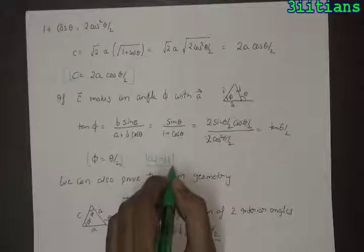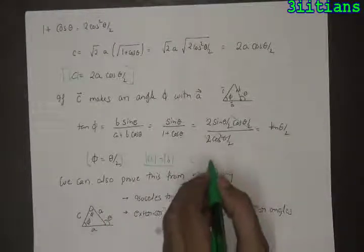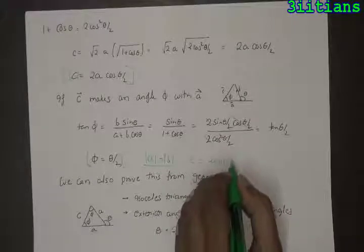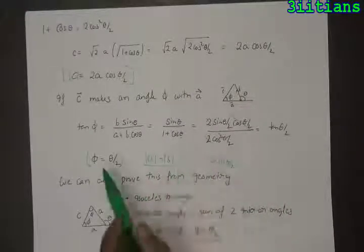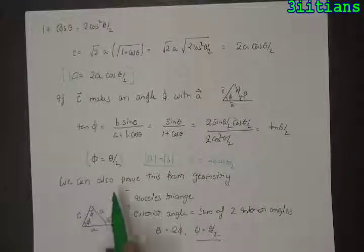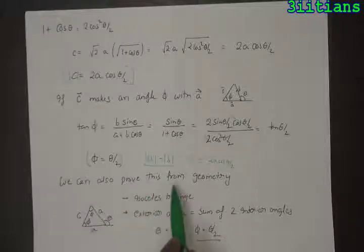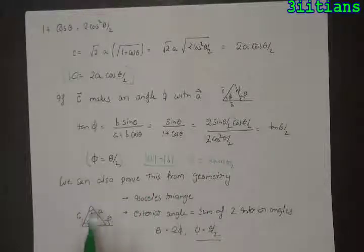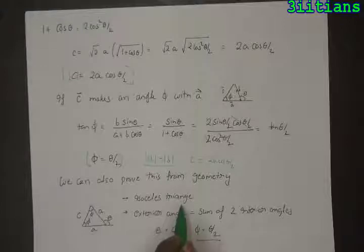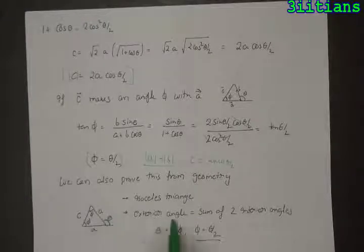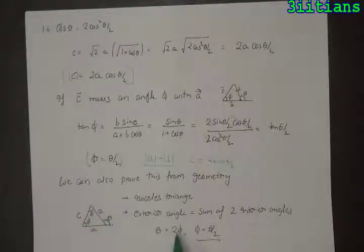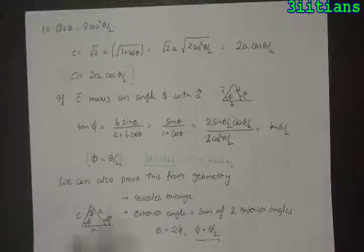So when the magnitude of a vector equals the magnitude of b vector, the magnitude of c vector equals 2a cos(theta/2), and it depends upon the angle between a vector and b vector. We could also prove the same result using simple geometry: in this triangle the two sides are equal, making it an isosceles triangle. The two base angles must also be equal, and the exterior angle is theta. The exterior angle equals the sum of the two opposite interior angles, so theta equals 2 phi, giving phi equals theta/2.